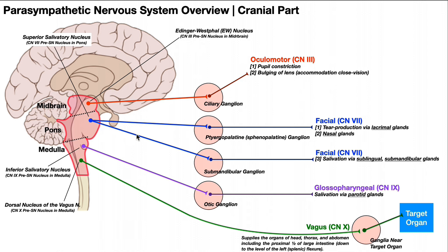The other neurons from the superior salivatory nucleus project to the submandibular ganglion, synapse with third neurons there, and those then project to the sublingual and submandibular glands — two of our extrinsic salivary glands — allowing salivation. So depending on which ganglion these facial nerve neurons travel to, that dictates the function they will have.